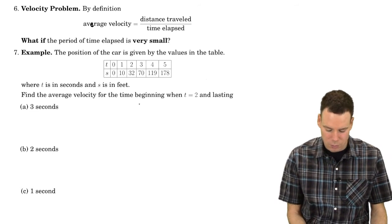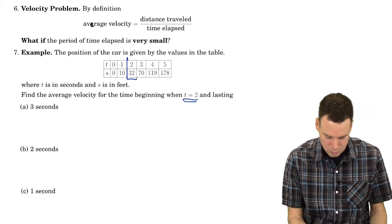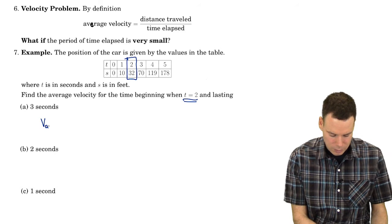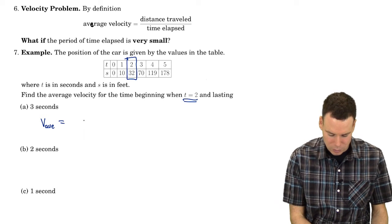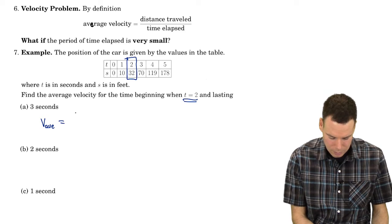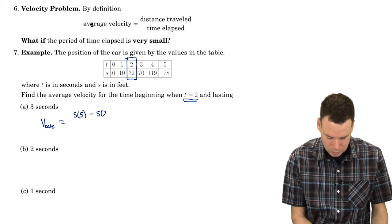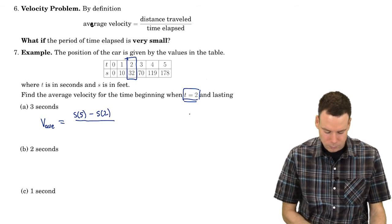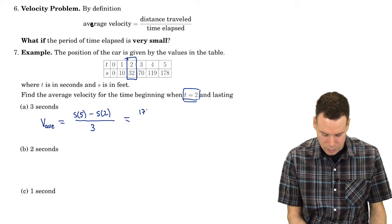Let's work out the average velocities over some intervals, starting at time 2. What's the average velocity over the next 3 seconds? Average velocity is the distance traveled divided by the time elapsed. The distance traveled is the ending position s(5) minus the starting position s(2), all over 3 seconds. That gives us 178 minus 32, all over 3.